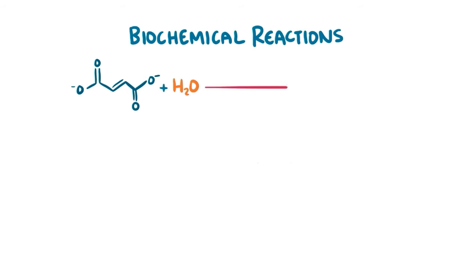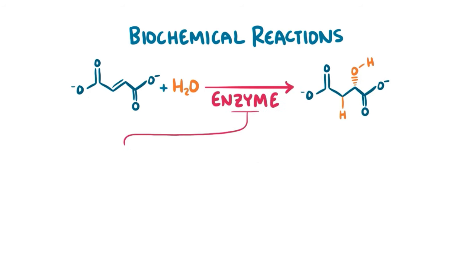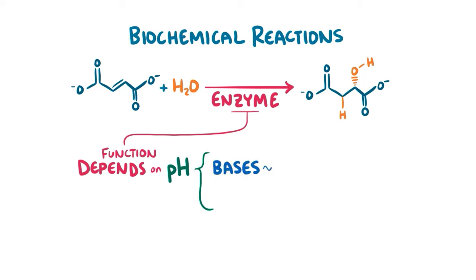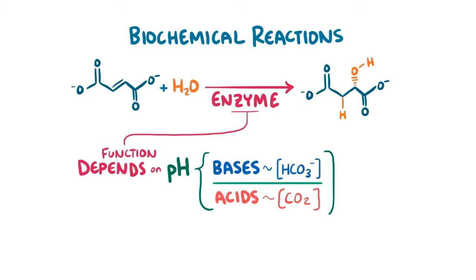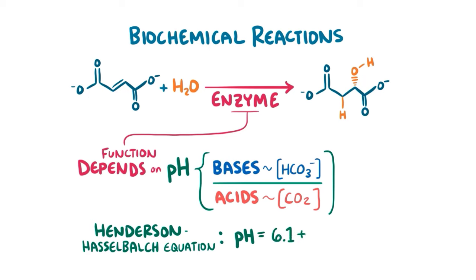Every single second, there are trillions of biochemical reactions going on inside our bodies. These reactions are mediated by enzymes, and for those enzymes to function properly, the pH of our body fluids needs to be within a tightly regulated range. This pH depends on the ratio of concentration of bases, mainly bicarbonate or HCO3-, and acids, mainly carbon dioxide or CO2, and it's calculated by the Henderson-Hasselbalch equation, where pH equals 6.1 plus the log of the concentration of bicarbonate divided by 0.03 times the partial pressure of carbon dioxide.